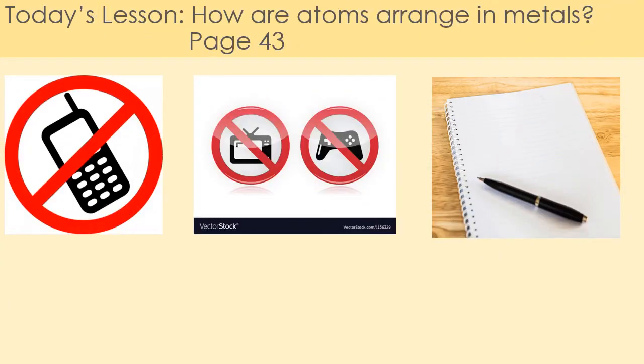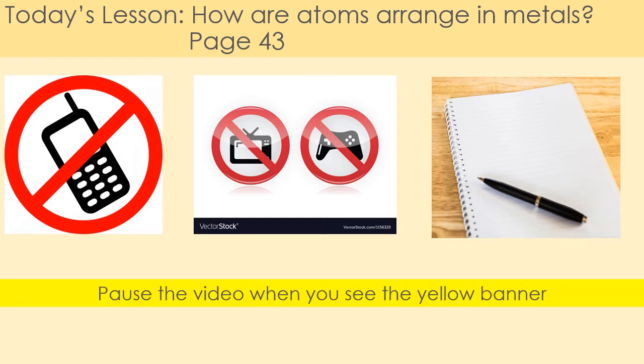In today's lesson we're going to look at how atoms are arranged in metals — that is on page 43 of your booklet. Please make sure that your phone is switched off and put away so it doesn't distract you, you have no TV on in the background, you're not playing any games, and you have your booklet and a pen ready. During the lesson you may see a yellow banner; when you see it, pause the video and complete the task on screen, then unpause and continue.